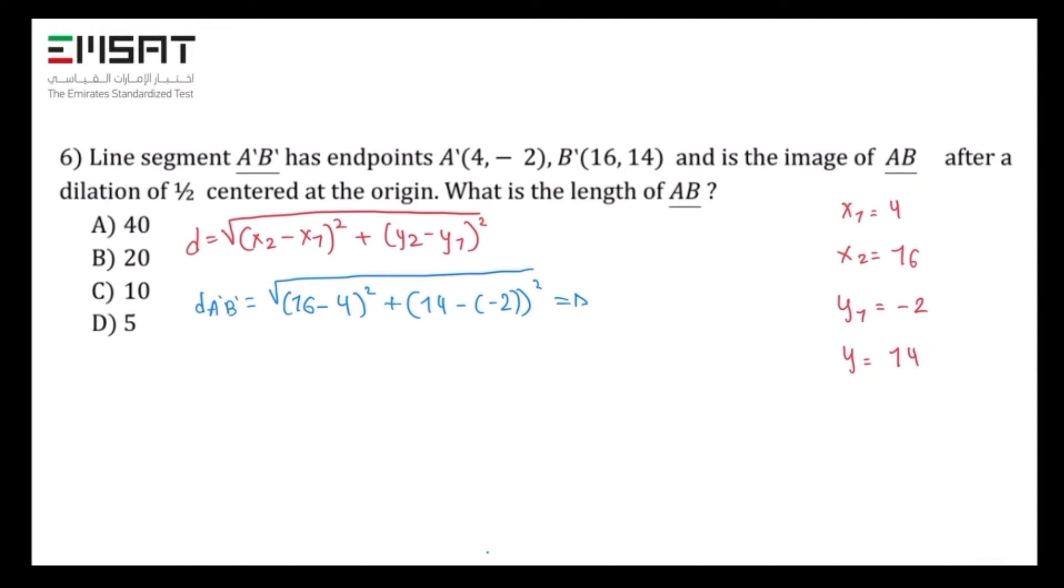It will be square root of 12 squared plus 16 squared. Then, square root of 12 squared equals 144 plus 16 squared equals 256, which is equal to square root of 400, which equals 20.